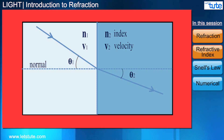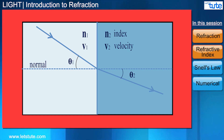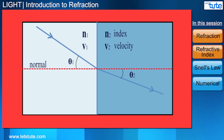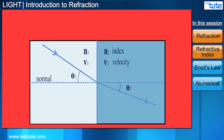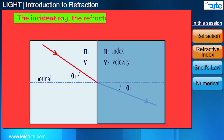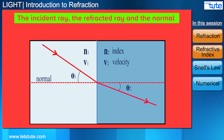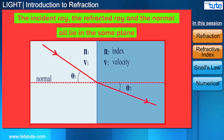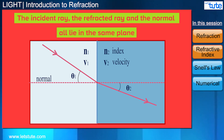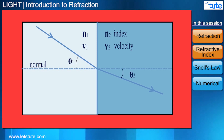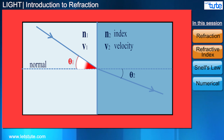Look at this diagram of refraction. Here we have an incident ray, a refracted ray, and a normal. This brings us to the first law of refraction: the incident ray, the refracted ray, and the normal all lie in the same plane. You can see this just by looking at the diagram. This angle is called the angle of incidence and this angle is called the angle of refraction.